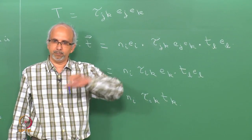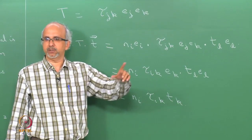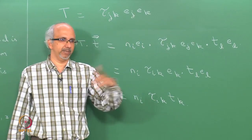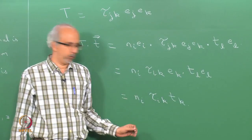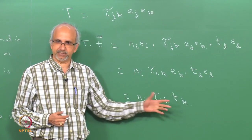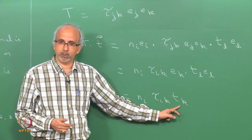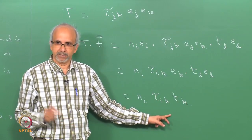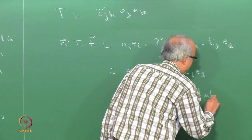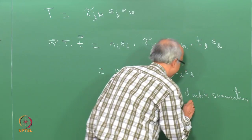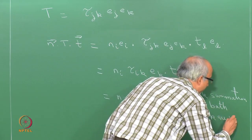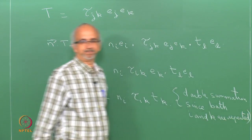The expression N_i tau_ik T_k is the result for N dot T dot T, where T_k are the components of the tangent vector, N_i are the components of the normal vector, and tau_ik are the stress tensor components. This involves a double summation since both i and k are repeated. Explicitly, for a 2D case, this expands to N_1 tau_11 T_1 + N_1 tau_12 T_2 + N_2 tau_21 T_1 + N_2 tau_22 T_2.